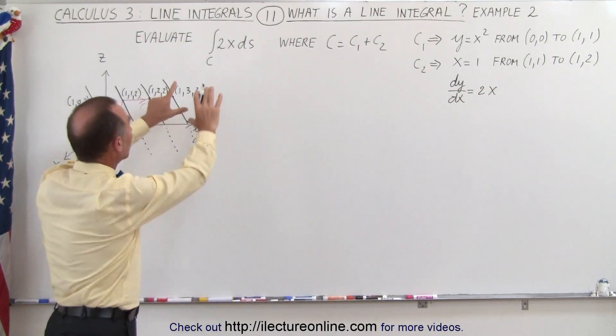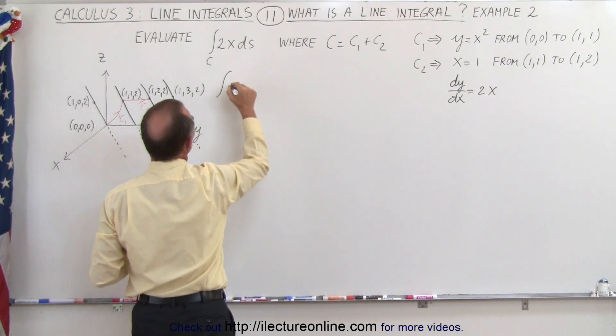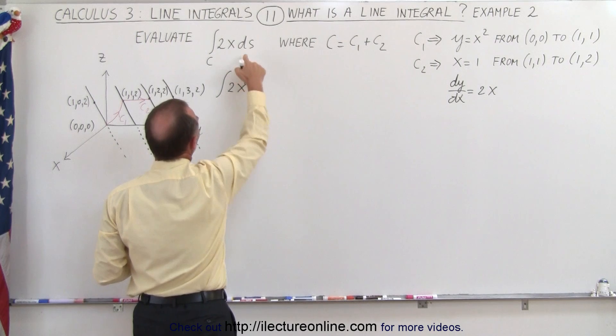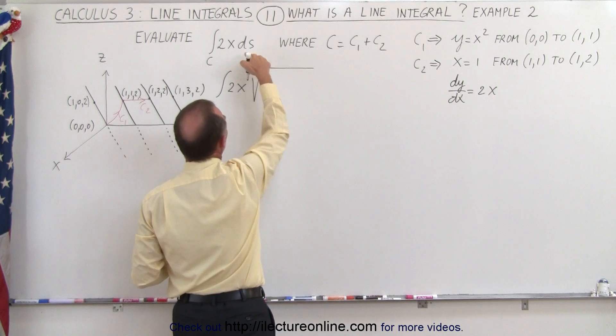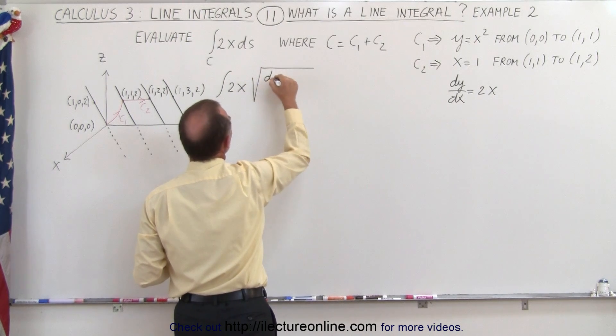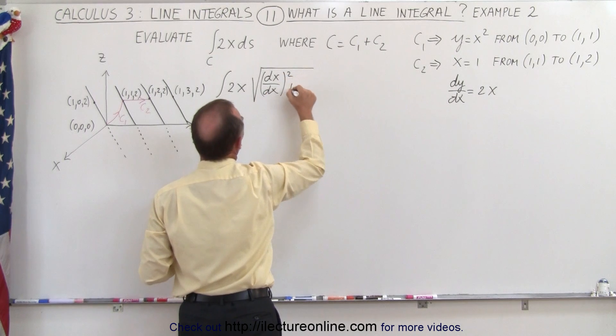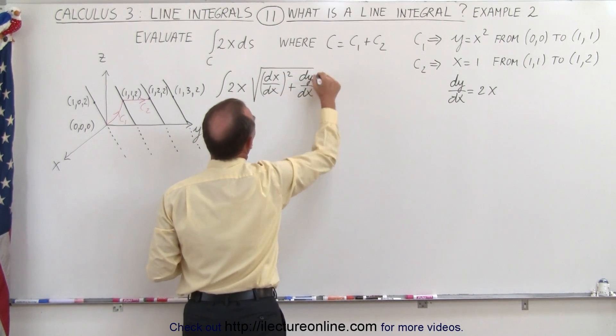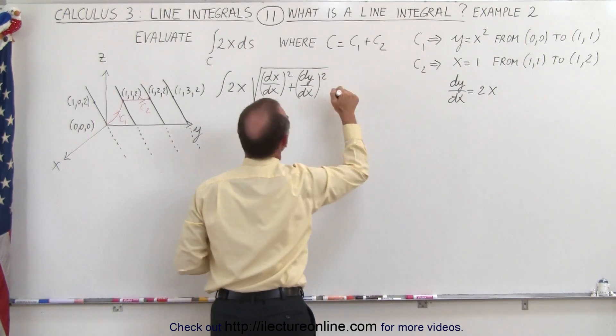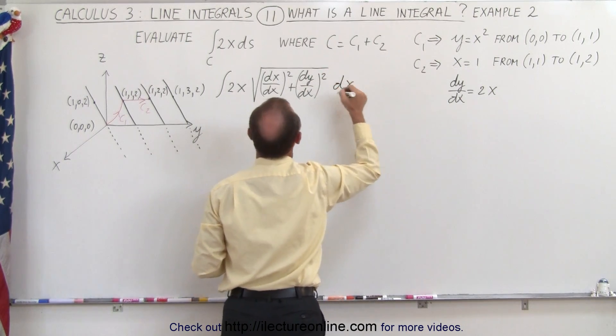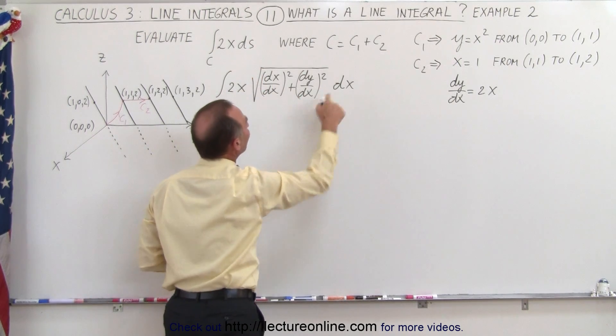So now we go ahead and plug that into our integral. So our integral is now going to become 2 times x times ds, and ds is going to be defined as ds/dx. So we can write this as (dx/dx)² plus (dy/dx)² quantity square rooted, and that's where we need the dy/dx from here, times dx. So ds/dx is equal to this, so ds will be equal to this, times dx.